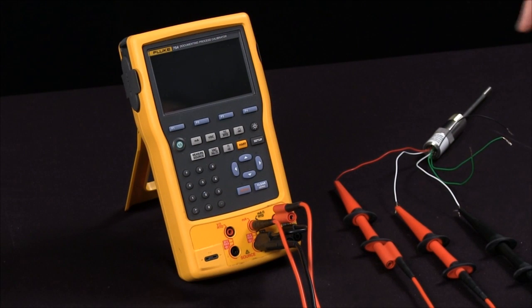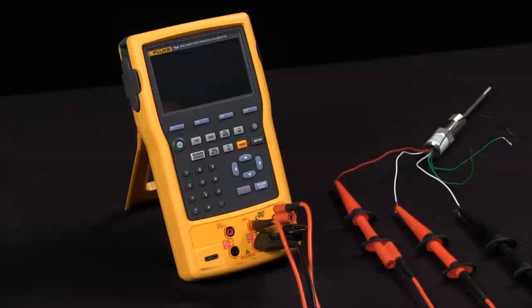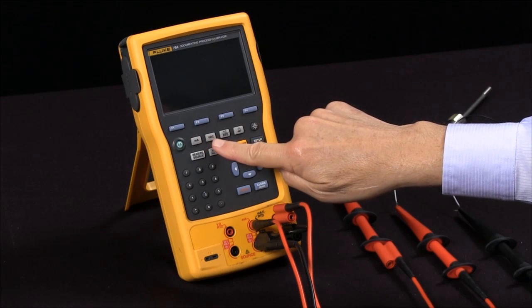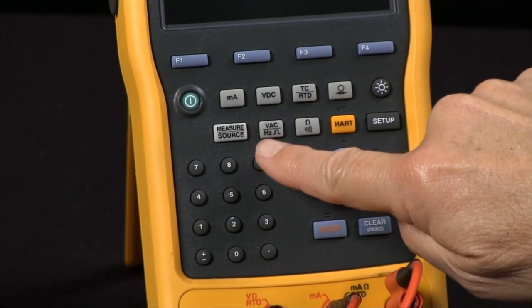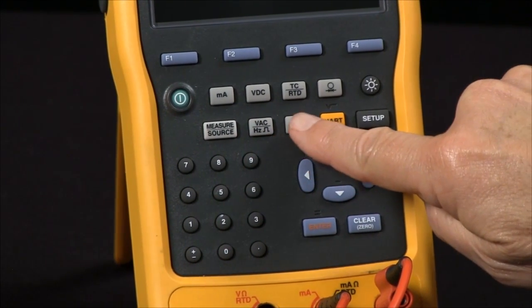The Fluke 754 documenting process calibrator can source and measure a wide variety of parameters: milliamps, DC volts, thermocouples, RTDs, pressure, volts AC, frequency, ohms, and continuity.